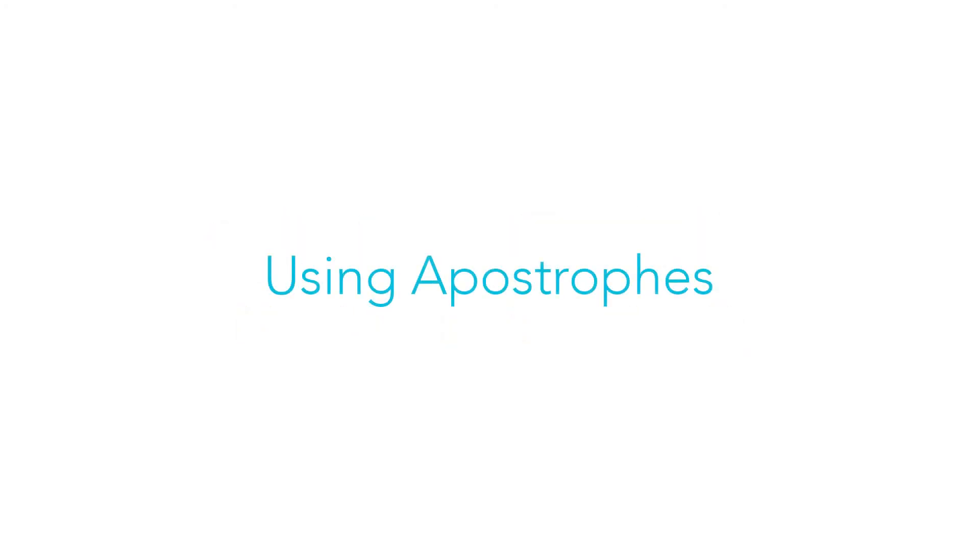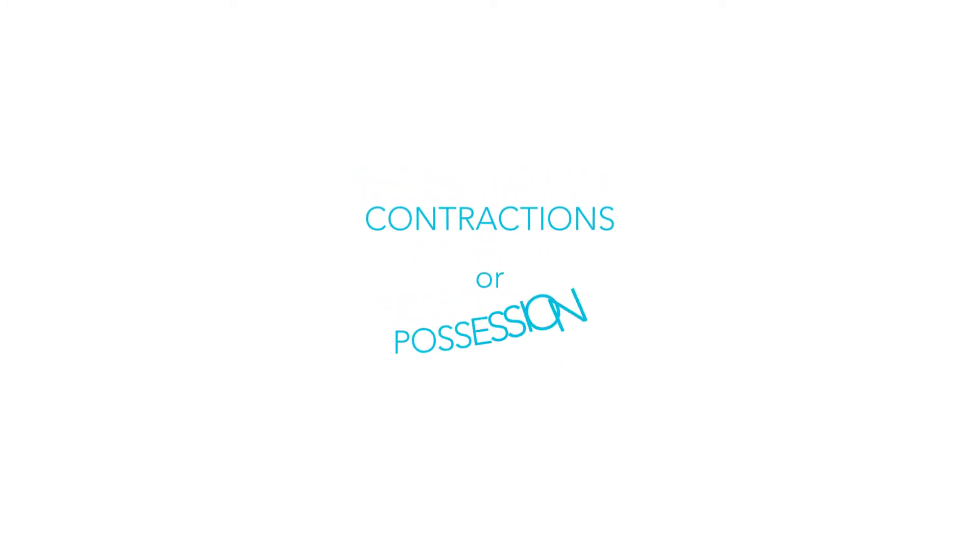Do you get confused about using apostrophes? Apostrophes don't have to be scary. I'm going to show you the two times you should use apostrophes. If an apostrophe is used in the wrong place, it can change the meaning of the sentence. There are only two times we need to use apostrophes: in contractions or to show possession.